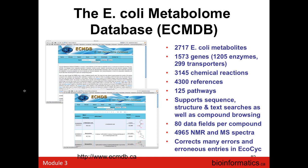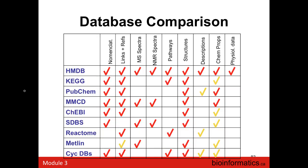These databases will hopefully be linked into MetaboAnalyst in the coming months so people can do more extensive pathway analysis. In comparing what these databases offer: HMDB — or YMDB, ECMDB, etc. — tries to cover nomenclature, references, mass spectra, NMR spectra, pathways, structures, detailed descriptions, chemical properties, and physical data. KEGG, PubChem, ChEBI, SDBS, and Reactome specialize in certain areas but not all of these. As a comprehensive model for metabolomics, the HMDB model is a strong one, though it still has ways to go in terms of the number of compounds and pathways depicted. As these databases grow in size, maintaining quality throughout becomes more challenging.